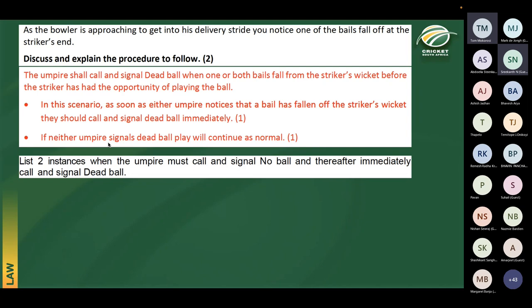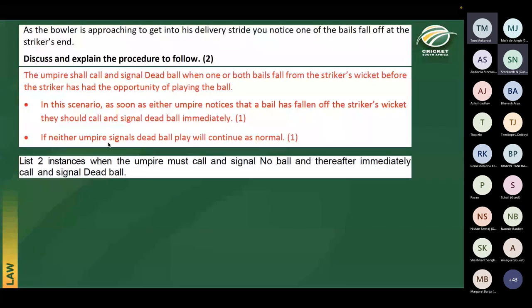Now a bonus points question: list two instances when the umpire must call and signal no ball and thereafter immediately call and signal dead ball. Note that the answers are in the no ball law, Laws 21.8 and 21.9, not in the dead ball law.